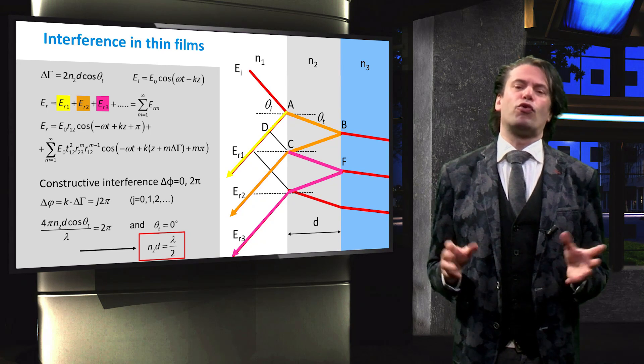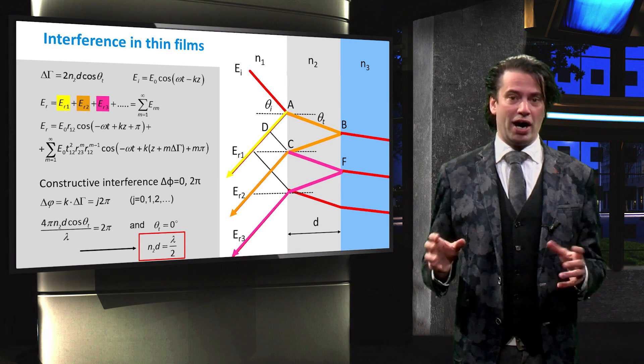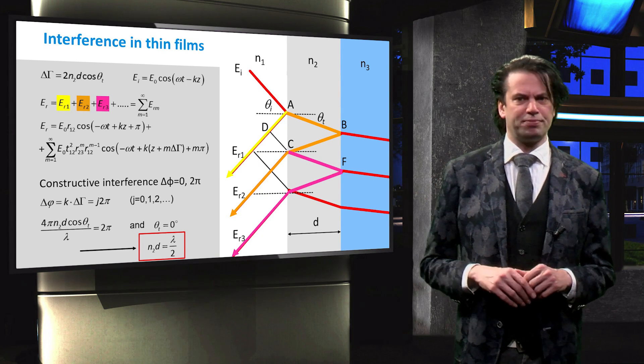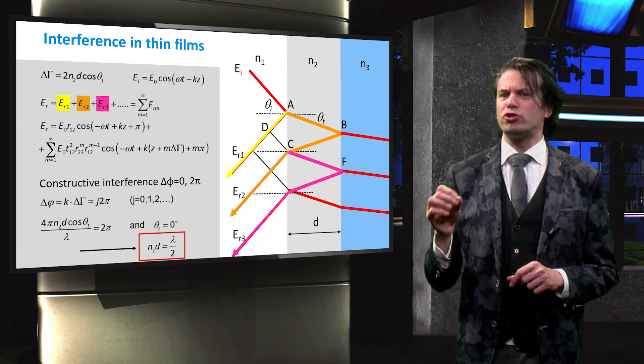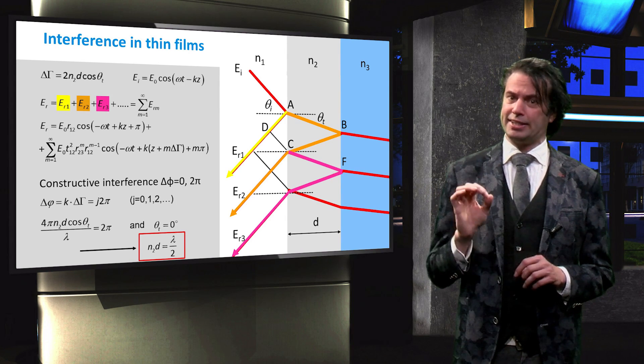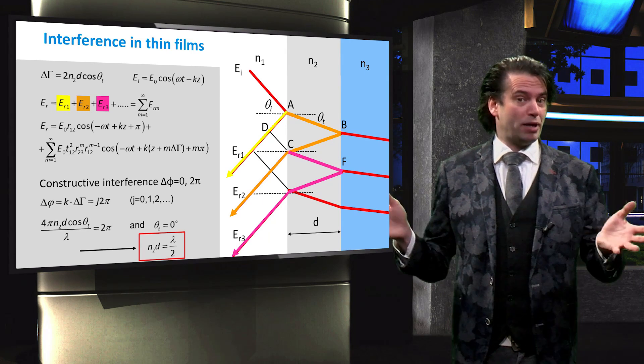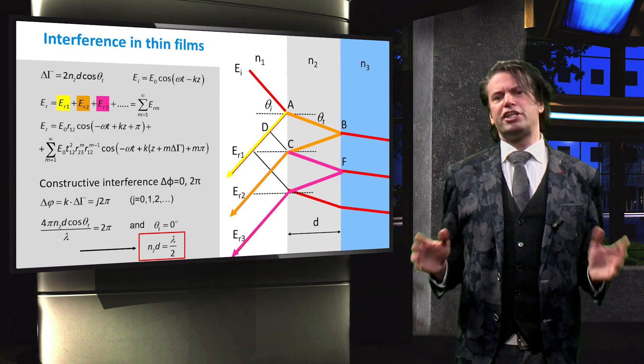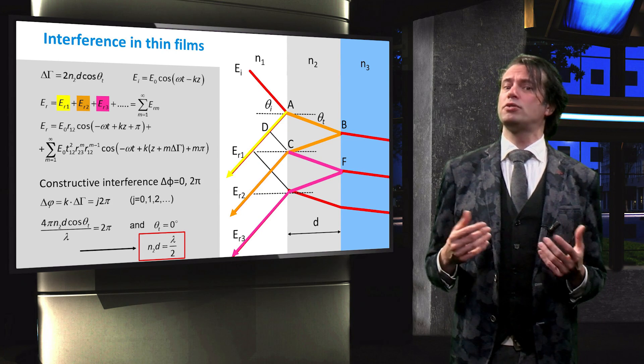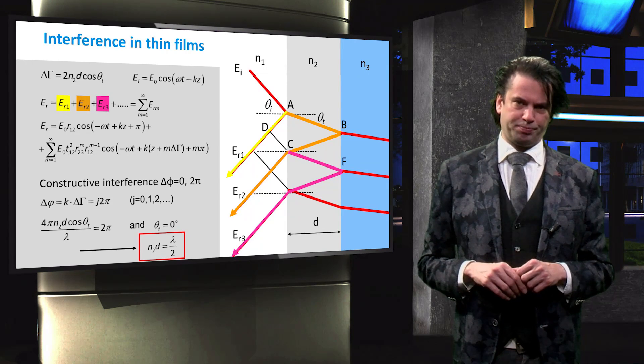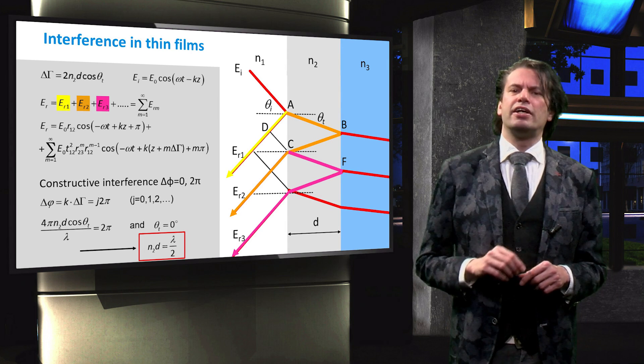Constructive interference occurs for waves with a phase shift of 2 pi or multiple of 2 pi. Therefore, superimposed reflected waves will exhibit constructive interference if the phase shift equals 2 pi. The phase shift is equal to the wave number times the optical path length difference.